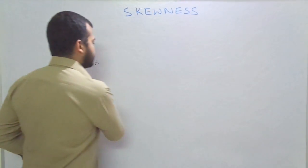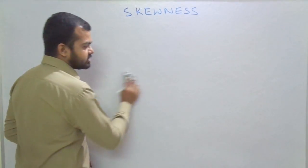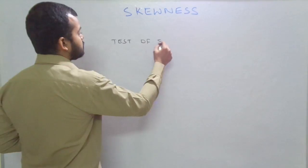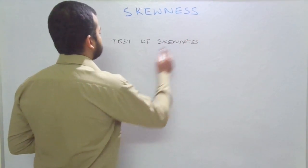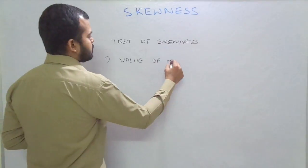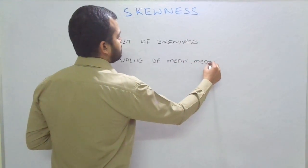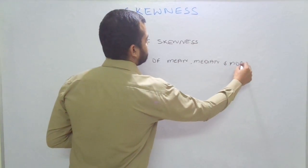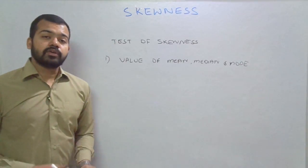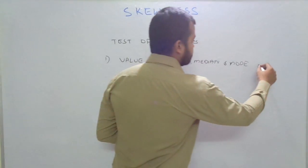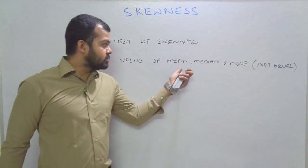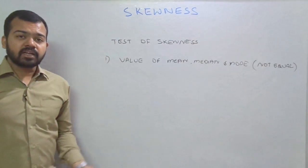The heading is: test of skewness. The first test is that the value of mean, median and mode should not be equal. Whenever we get different values for these three — mean, median and mode are not equal — we can easily say that the series is skewed.